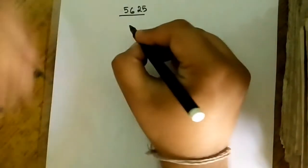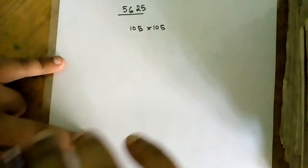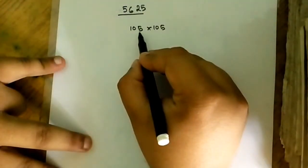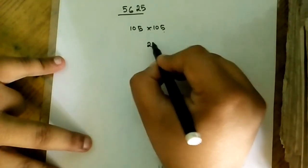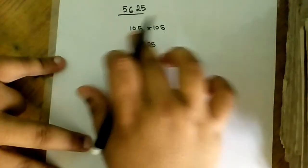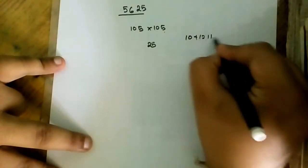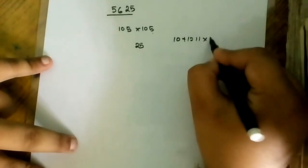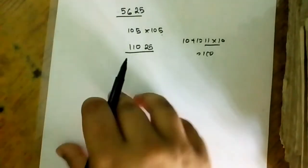Now let's take an example which is a three-digit number, let's say 105 into 105. The first step will be the same for every case. I have to multiply the two 5s. Now 5 into 5 results as 25, and the remaining is 10 and 10. I will add 1 with any 10, that is 10 plus 1 equals 11. Now 11 into 10 is equal to 110, so 110 25. This is the required answer.